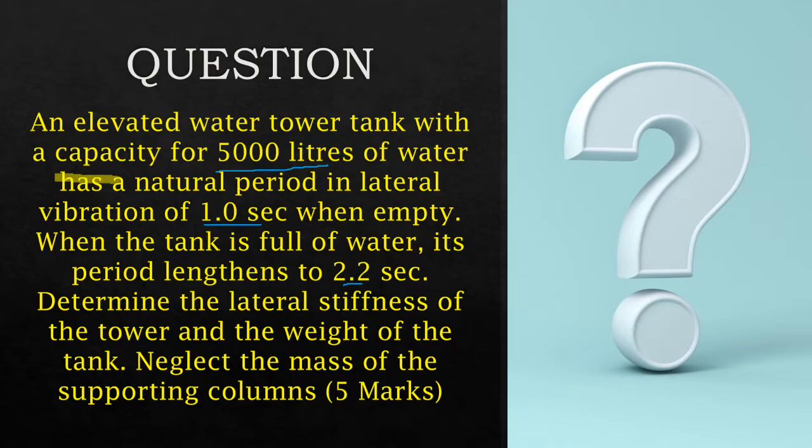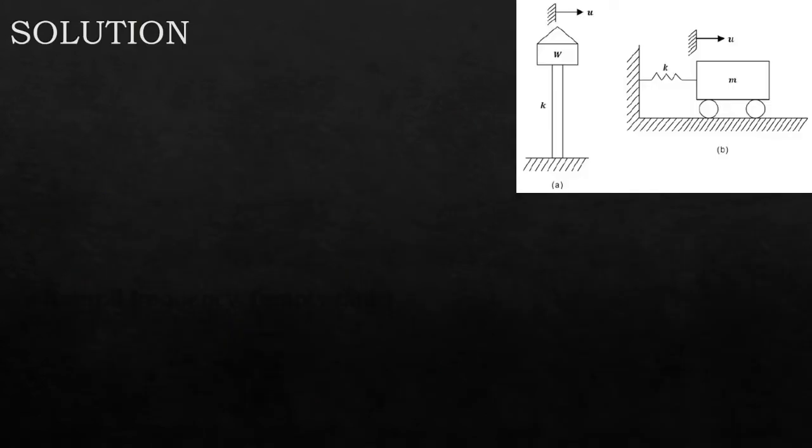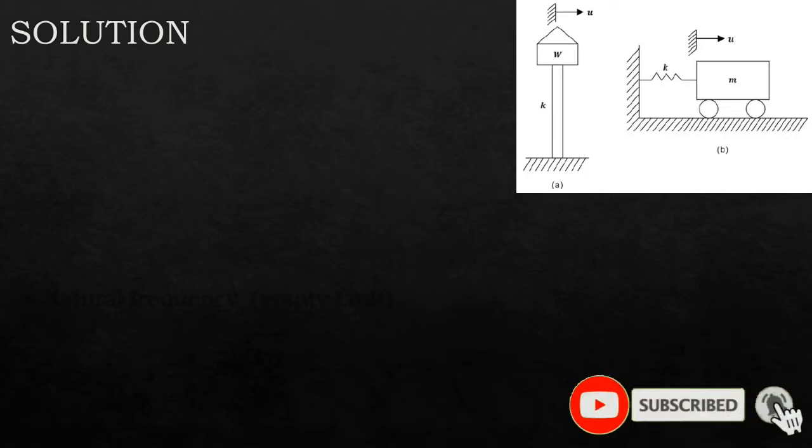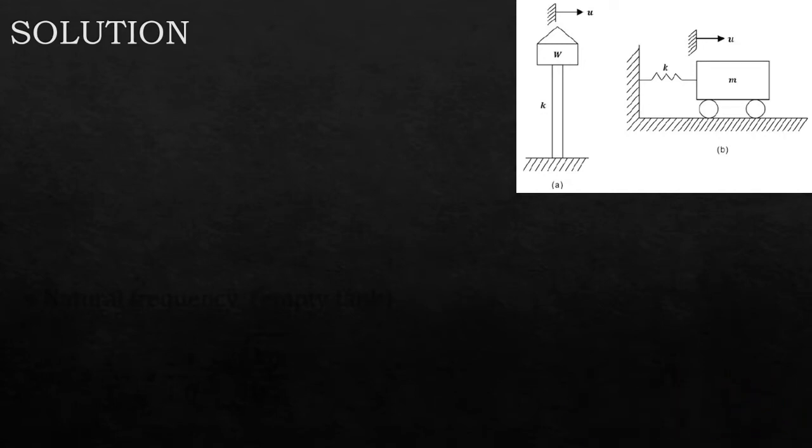Let's see the solution. It's always good to idealize graphically what your problem is. So you are seeing this elevated tower that has got a weight W, and this tank of course has a capacity of 5000 liters. The volume, with density of one gram per centimeter cubed, means we can obtain the weight. This is the physical system.